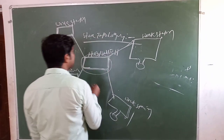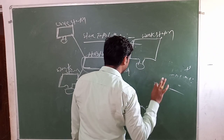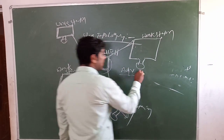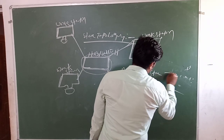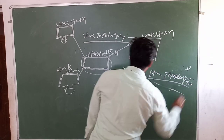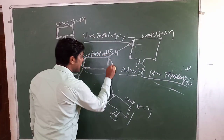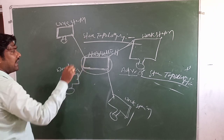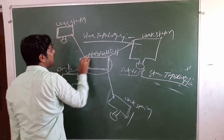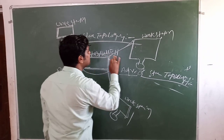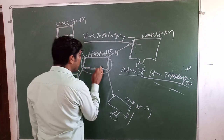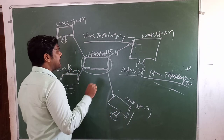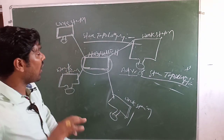Every network topology has advantages and disadvantages. The advantages of star topology are: first, adding and removing nodes from the hub or switch is very easy. Every node connected to the hub or switch can be added or removed easily.